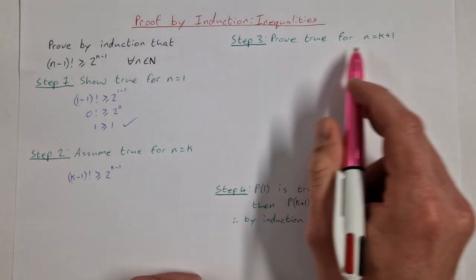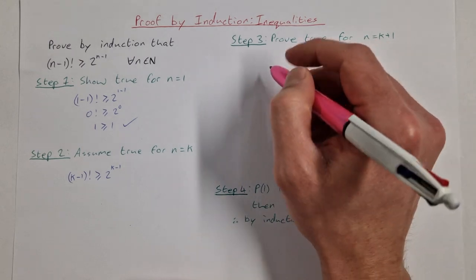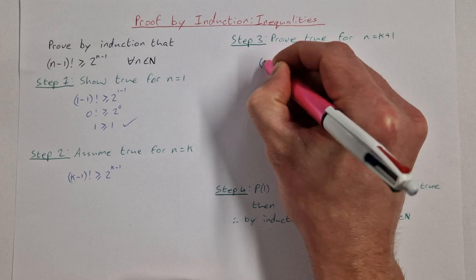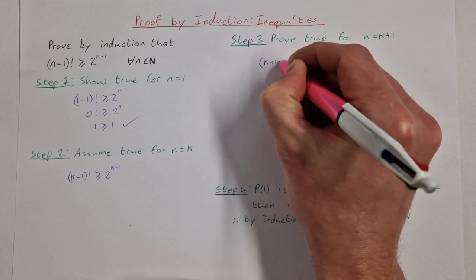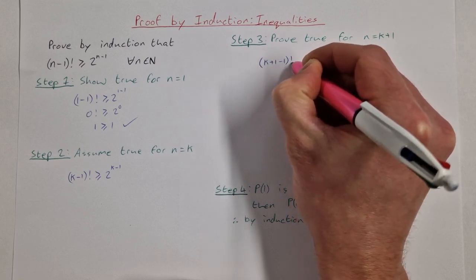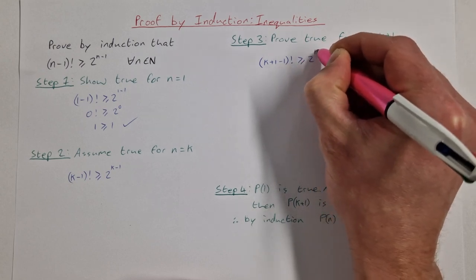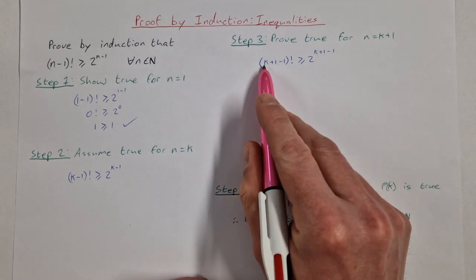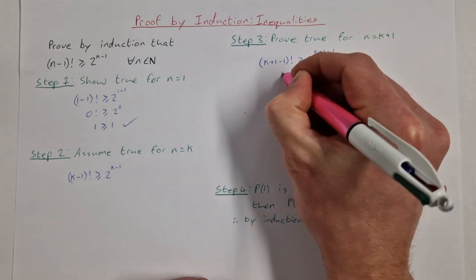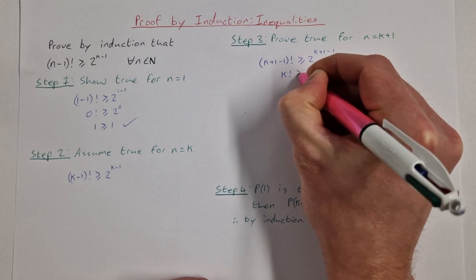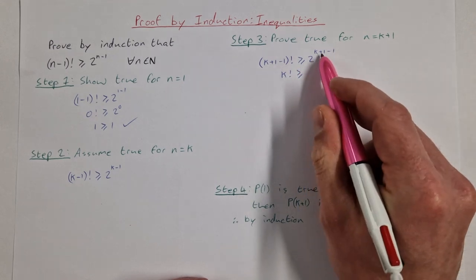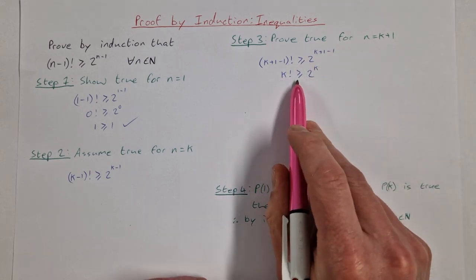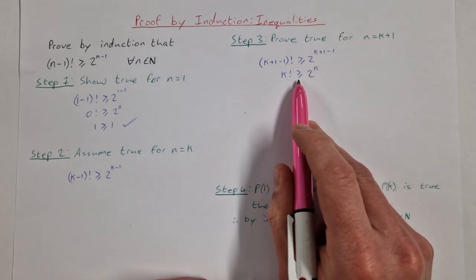Step 3: prove true for n = k+1. Substituting k+1 instead of n gives (k+1-1)! ≥ 2^(k+1-1). Working on this, k+1-1 is just k, so we need to prove that k! ≥ 2^k.